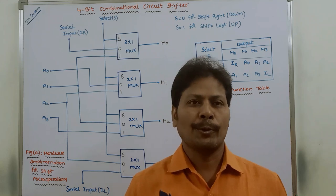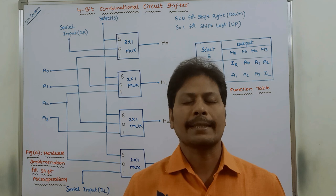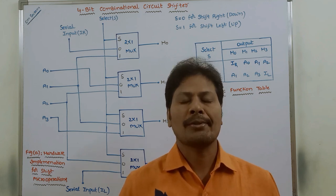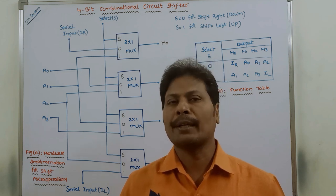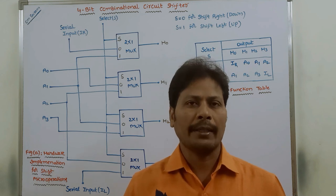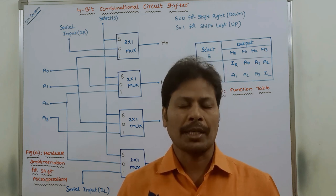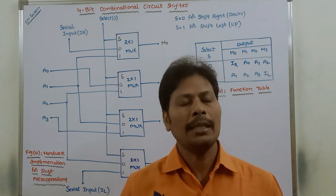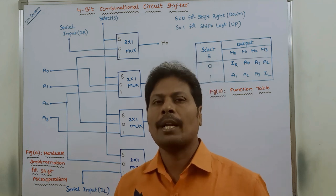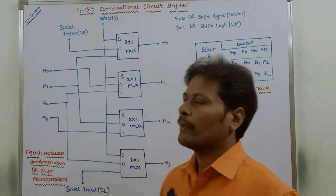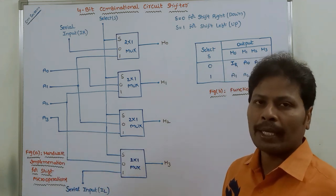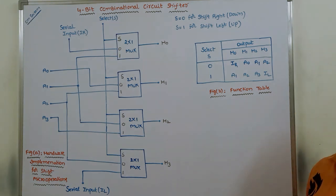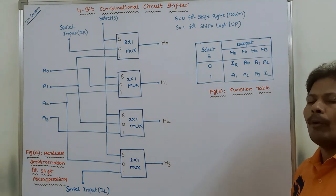Welcome back to our YouTube channel. Today we have to discuss about the 4-bit combinational circuit shifter, or a hardware implementation for shift micro operations, in computer organization, computer architecture, and computer organization and architecture courses. It is one of the important concepts. Figure A shows the hardware implementation for shift micro operations and figure B shows the function table for hardware implementation for shift micro operations.